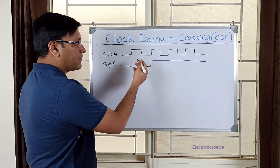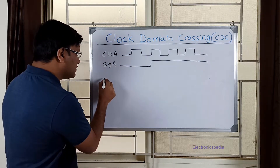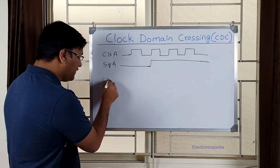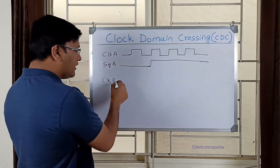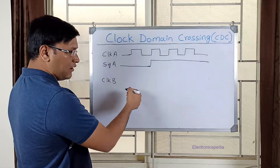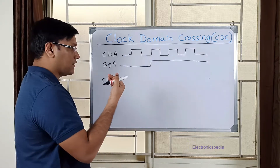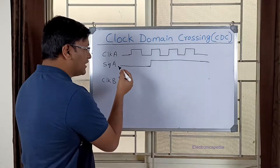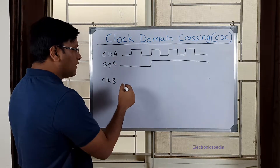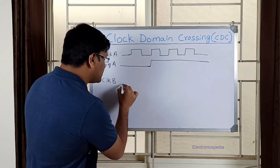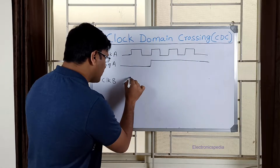Now I want to transfer this signal from clock domain A to clock domain B, so I'll draw Clock B. Clock A and Clock B are completely asynchronous — they can be multiples of each other or completely unrelated. So I'm just drawing some clock over here.